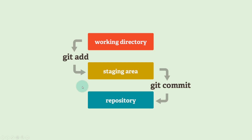Now, how to move the file from the staging area back to the working directory? This scenario arises when, by mistake, you have added all the files but you don't want to commit all of them. So how to remove specific files from the staging area back to the working directory?